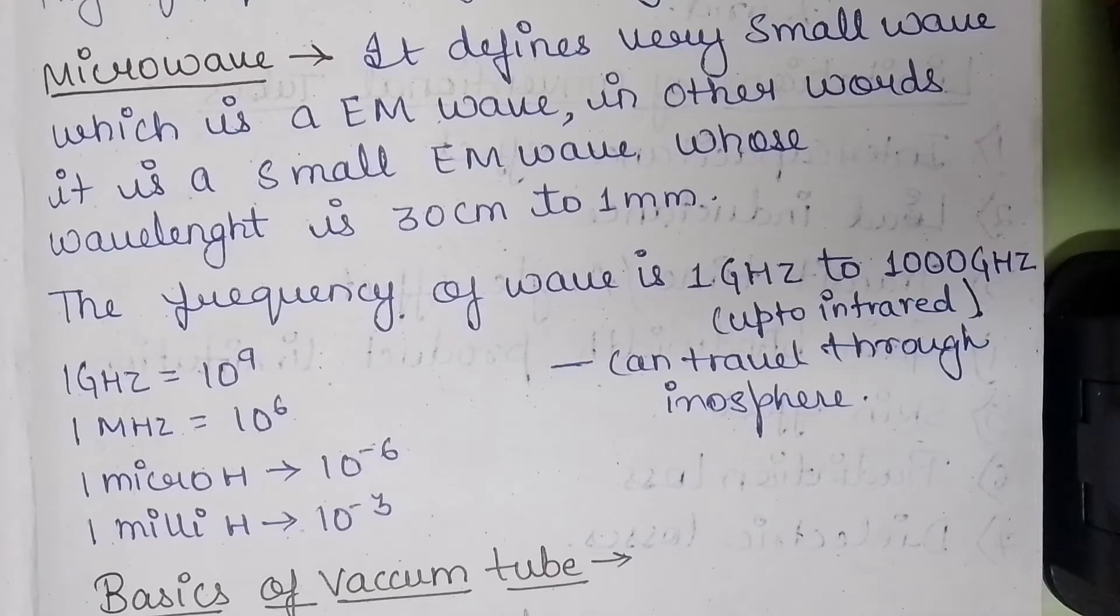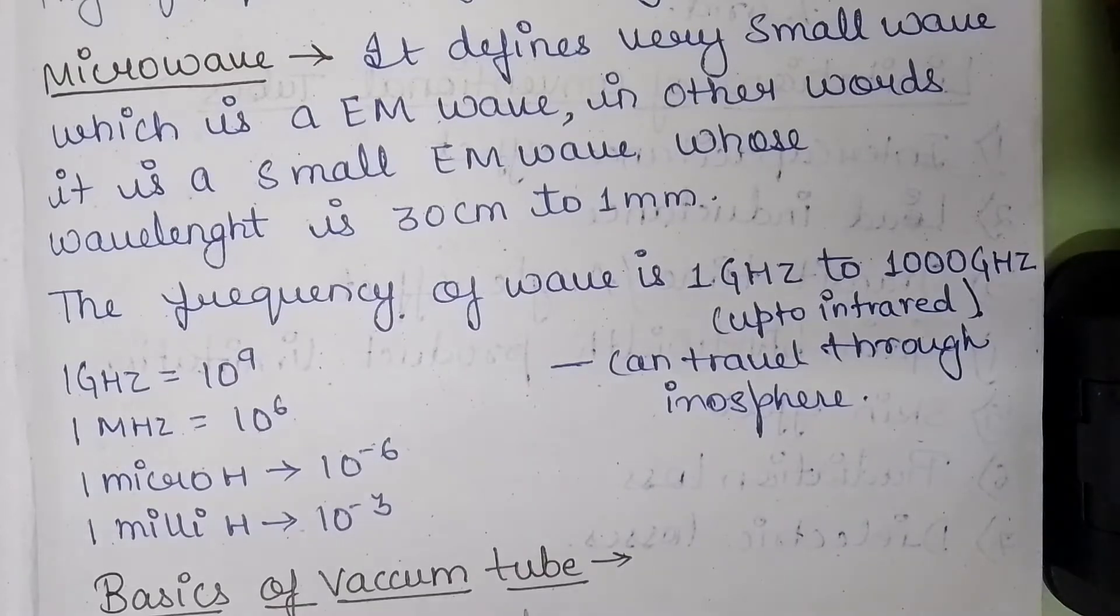So firstly, what is a microwave? It is a very small wave and it is an electromagnetic wave. In other words, it is a small electromagnetic wave whose wavelength is approximately 30 centimeters to 1 millimeter.